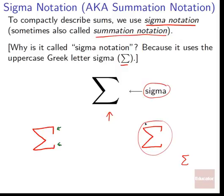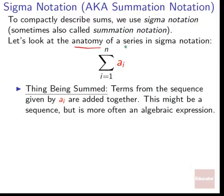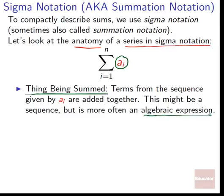Let's look at the anatomy of a series in sigma notation. The first thing is the thing being summed — the terms given by Ai to the right of the sigma are added together. This is what gets added with each step. It might be a sequence, but it's much more often going to be an algebraic expression — something like 3i plus 10, or 2^i, or i factorial — so that you can plug in a number and get a value.